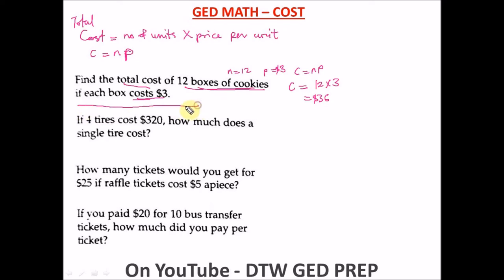Our answer is 36 dollars. Don't forget — in your test, you don't just write 36. Always include the unit of measurement, which here is the dollar sign.